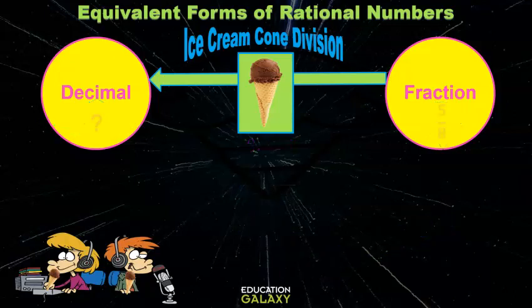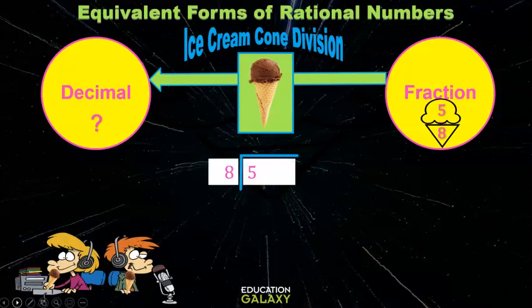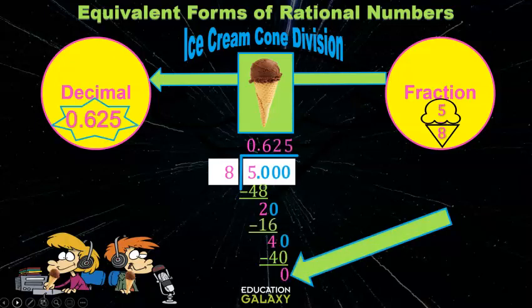You try this one, Melvin. Okay. The five is the ice cream, so it goes in the freezer, and the eight goes on the outside. I'll put my decimal point in some zeros and keep on with my division until I get a zero remainder. So five-eighths is zero point six two five, or six hundred twenty-five thousandths.